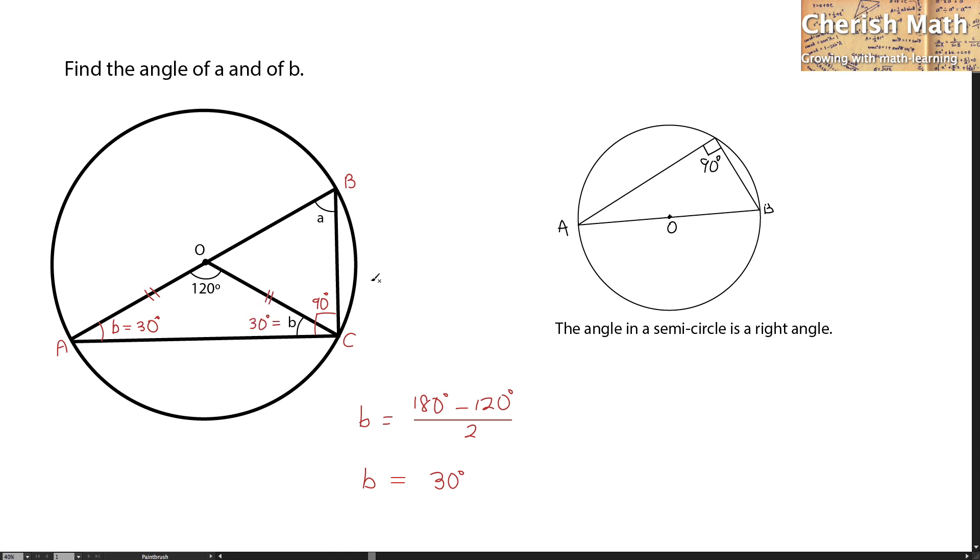The same isosceles triangle is going to form on the BOC triangle. That means this part OB is the radius same as the OC radius here.